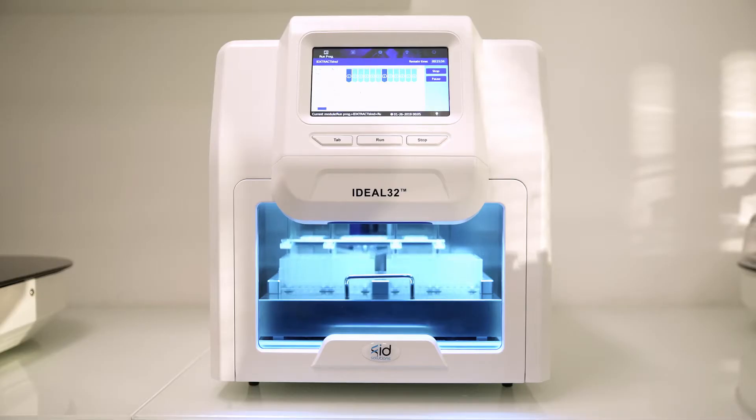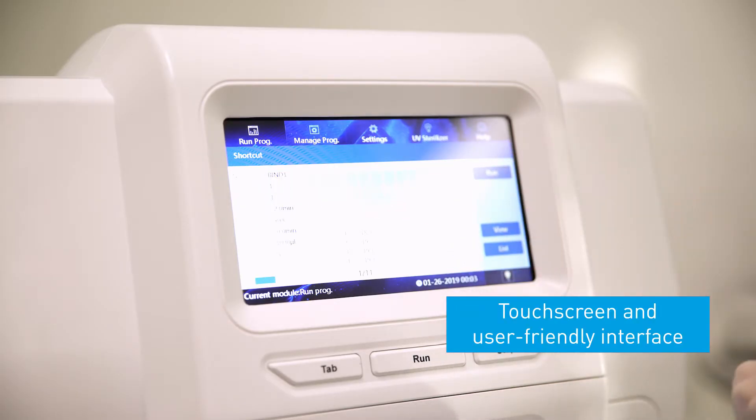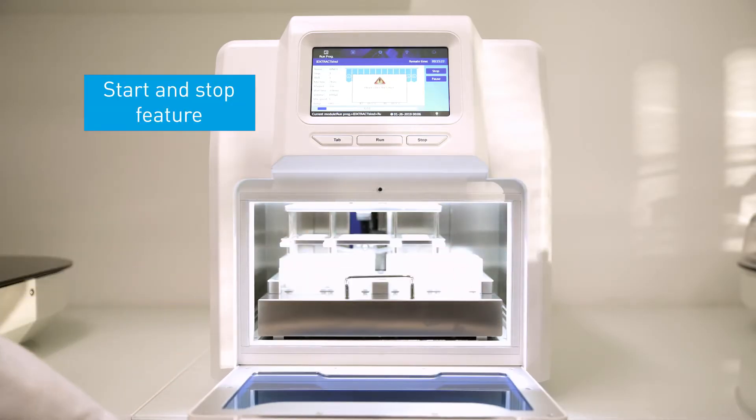The Ideal 32 robot also extracts nucleic acids from sample volumes ranging from 20 microliters to 1 milliliter. The device is easy to use with a touch screen and user friendly interface. This machine also includes a start and stop feature.